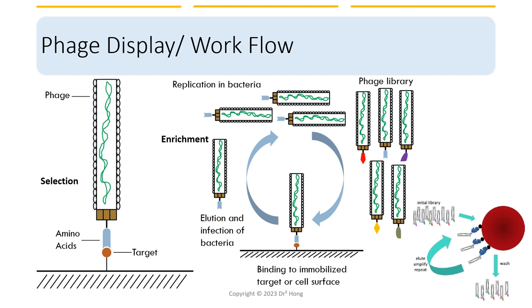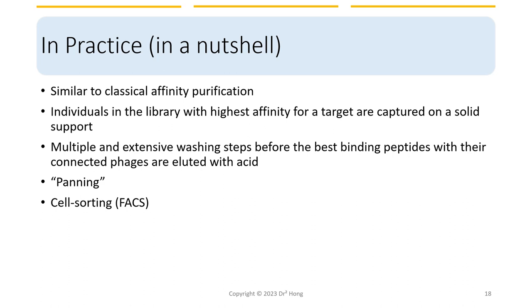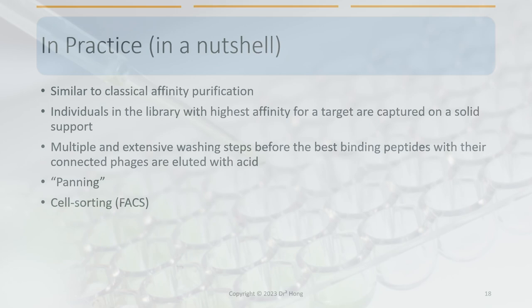During the enrichment stage, the isolated phage particles are used to infect a new culture of bacteria, which leads to the production of a new library of phage particles with the selected mutations. This process is repeated multiple times to enrich for the desired mutations. The whole selection process is similar to classical affinity purification, in which individuals in the library with the highest affinity for a target are captured on solid support. Multiple extensive washing steps are performed before the best binding peptides, connected to the phage, are eluted with acid. Typically, the separation process is done with a simple panning experiment or fluorescence-activated cell sorting (FACS).